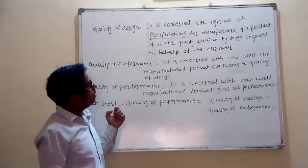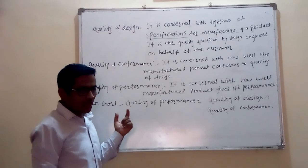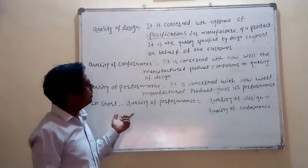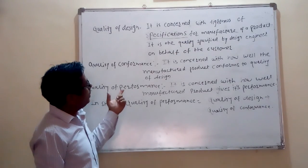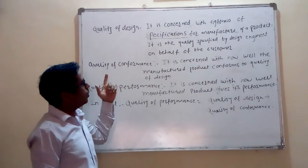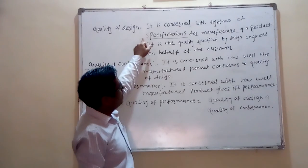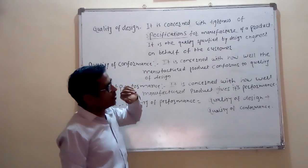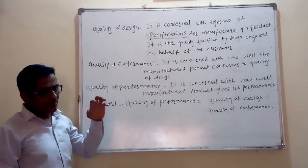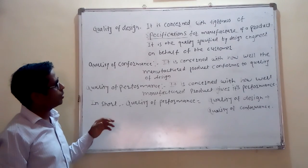Depending upon the product — whether it is a shed, whether it is a building, whether it is a vehicle — accordingly the specifications vary from product to product. These are in general specifications, and tightness of specifications means how specifications are given by the design engineer in the design of the product.